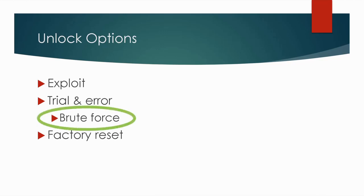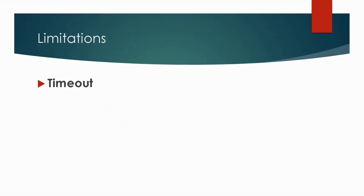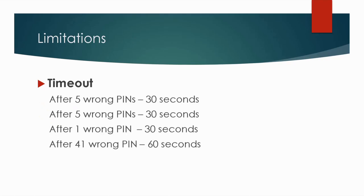The only method we will focus on in this video is brute force. Using brute force has its limitations — there are two, to my knowledge. The first one is a timeout. There is no way to bypass the timeout without an exploit. After five wrong PIN attempts, there is a 30-second cooldown. Another five wrong attempts, another 30 seconds. After each wrong PIN there is a 30-second cooldown until you reach 41 attempts, then there is a 60-second cooldown after each wrong PIN. These timeouts are for stock Android, at least to my knowledge. If you are using a custom UI such as custom MIUI, there might be some differences.